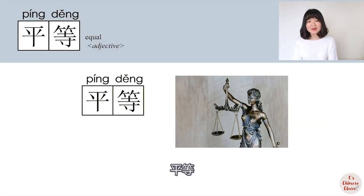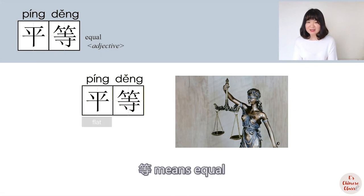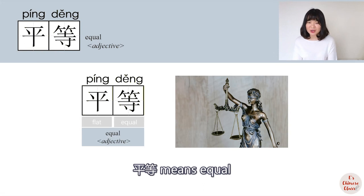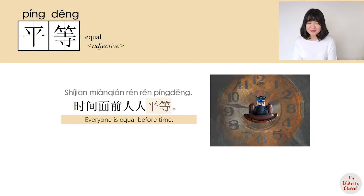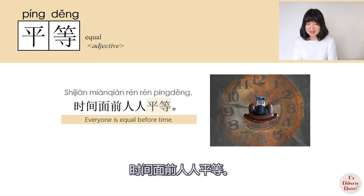平等: 平 means flat, 等 means equal, so 平等 means equal. Example: 时间面前，人人平等 — Everyone is equal before time.